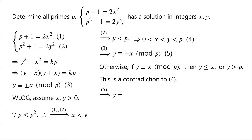Thus y is congruent to negative x modulo p, so we let y equal mp minus x. From the inequalities 0 < x < y < p, m must equal 1: if m is greater than or equal to 2 then x plus y is greater than 2p, and if m is less than or equal to 0 then x plus y is less than or equal to 0, both contradictions. Therefore m equals 1.